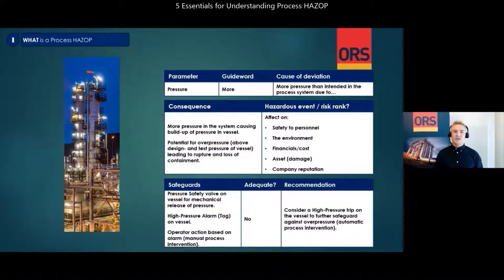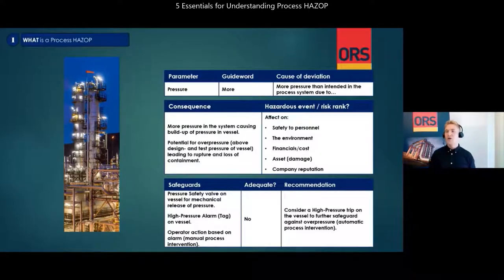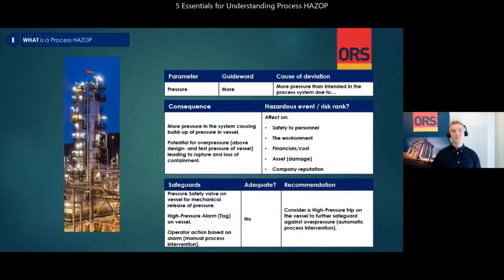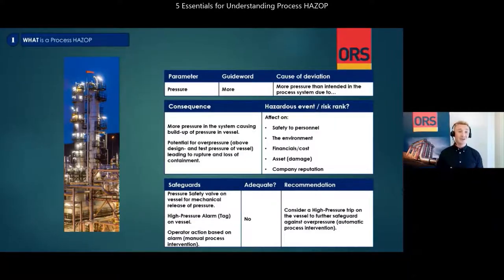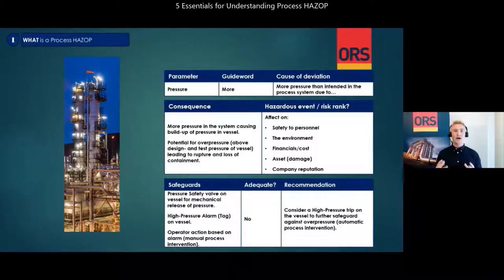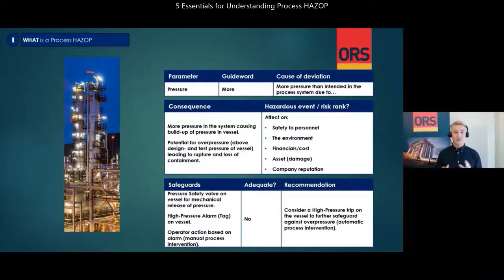If the safeguards in place are deemed insufficient to cater for the event, a recommendation is raised. For example, consider a high pressure trip on the vessel to further safeguard against overpressure — this would then be an automatic process intervention. This was a very high level introduction to the methodology. If you have questions regarding what guide words to use, how to divide the system into nodes, and when and how to apply risk ranking and residual risk ranking, and how to write good recommendations, please write in the comment section during this presentation.